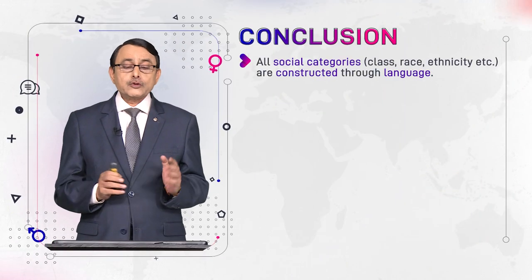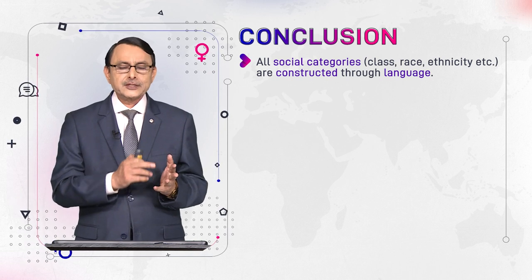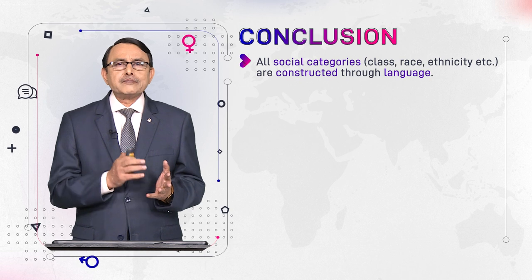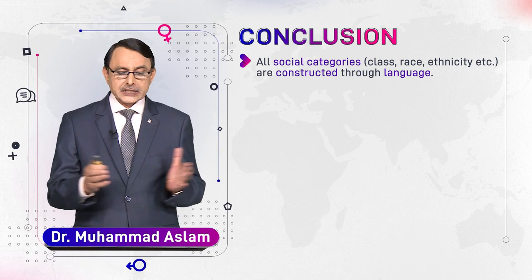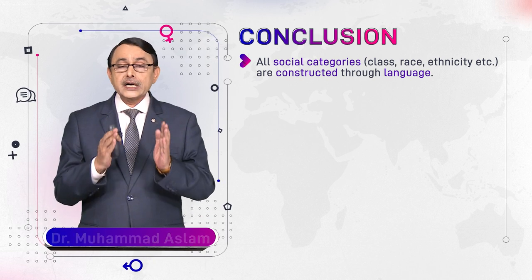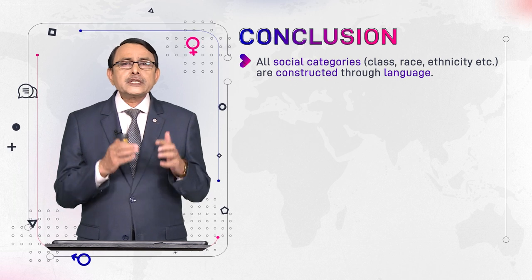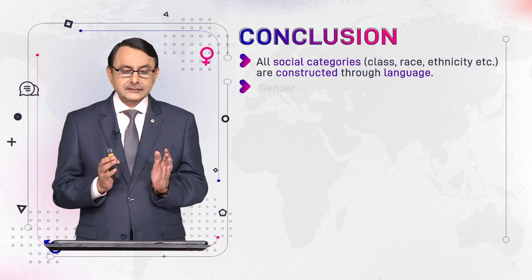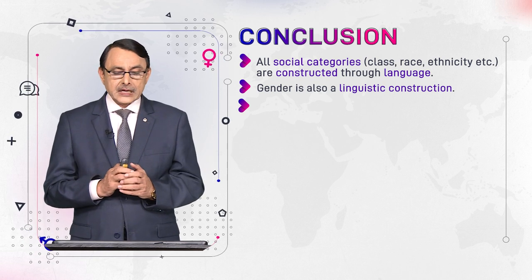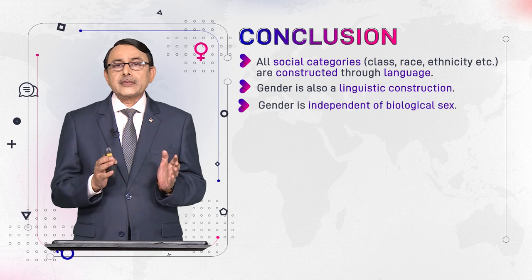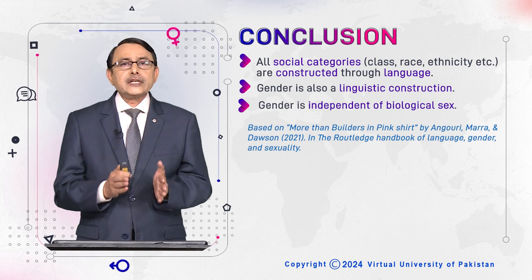In conclusion, all social categories — social class, race, ethnicity — are constructions, and language constructs them. Gender is also a linguistic construction, and gender is independent of biological sex when used in this sense.